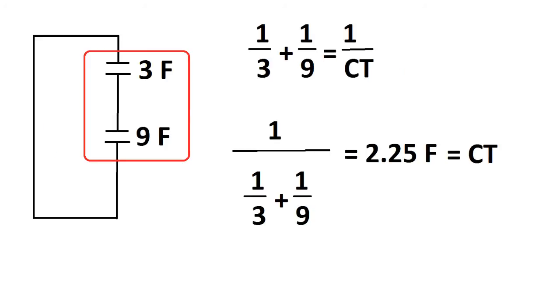Now I've replaced the 4 and 5 farad capacitors that were in parallel with the equivalent total capacitance of 9 farads. Now these two capacitors are in series so we just take 1 over 3 plus 1 over 9 and this equals 1 over CT.